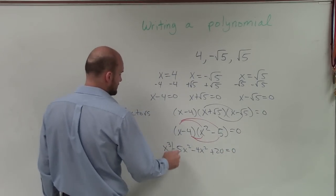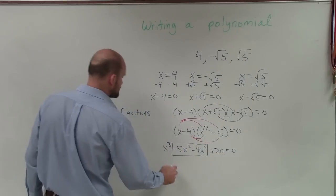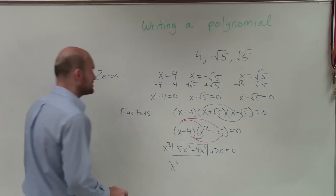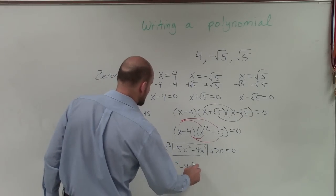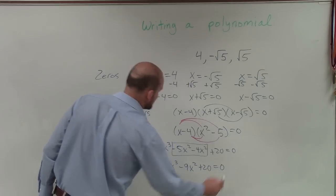Now, I notice that I can combine these two terms. So I have a final answer of x cubed minus 9x squared plus 20 equals 0.